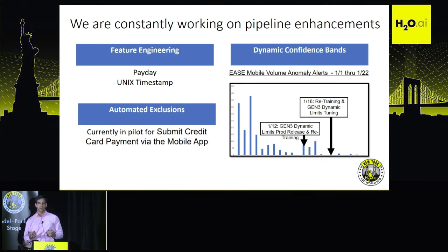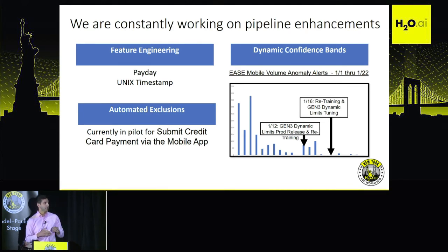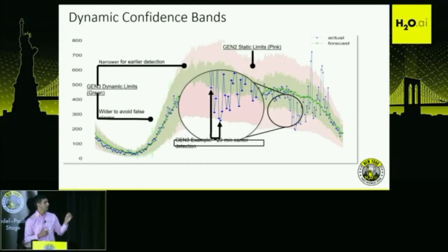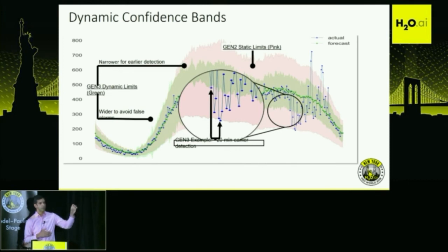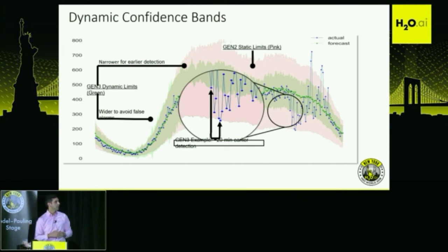Our dynamic limits look at the previous two months — the time of day and day of week at each given point — and build the limits off of that. As you can see, this helped avoid false alarms while also providing narrower limits when we had more confidence in the data and less fluctuation. The pink line shows our static limits and the green shows our dynamic limit confidence bands. In this example, we're about 20 minutes earlier in detection by having that narrower limit at the higher volume point, without sacrificing anything in the lower volume aspect of the data.